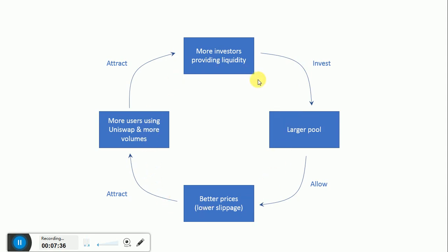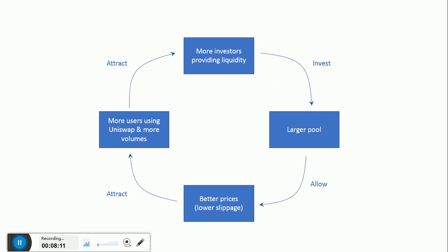So this is really a cycle. If we break the cycle for a second: for a given volume of transaction, you want to be in the smallest pool possible. But bear in mind it's really a network scale effect where the larger the pool, the better the prices; better prices attract more users; more users and more volume attract more investors; and therefore an even larger pool, and so on and so forth. That's why I think as Uniswap gets momentum — and obviously it's not the only decentralized exchange, so we'll see what happens — it has a built-in scale effect, which I believe is pretty powerful.